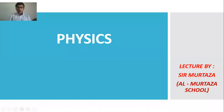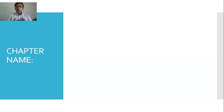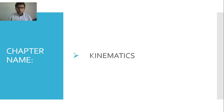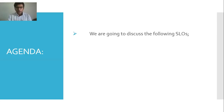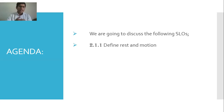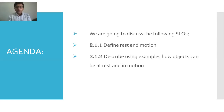Hello students, this is Sir Murtaza from Al Murtaza School. Welcome to another lecture of physics. Today we are going to start a new chapter called Kinematics. We will cover the following SLOs: define rest and motion, look at their definitions, and describe using examples how objects can be at rest and in motion.